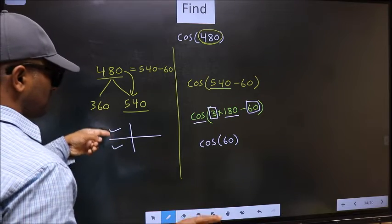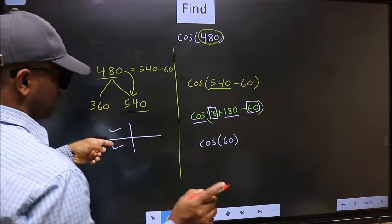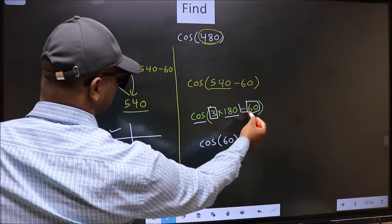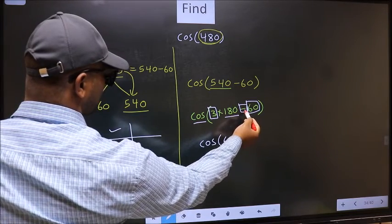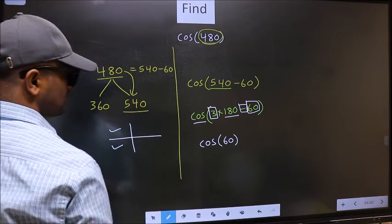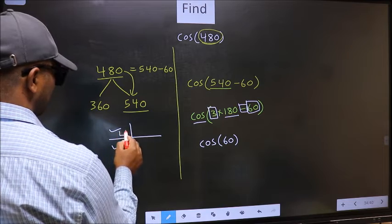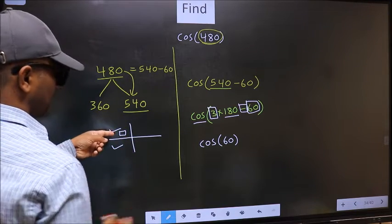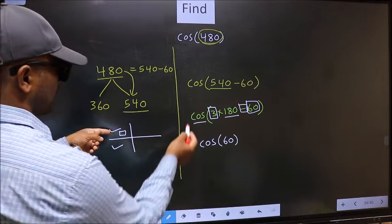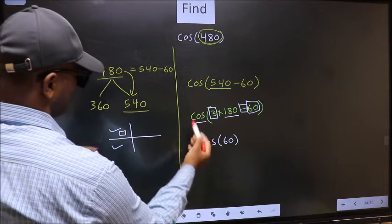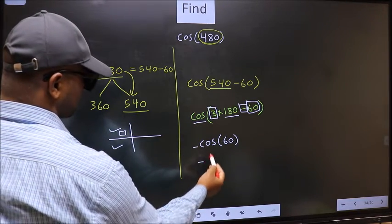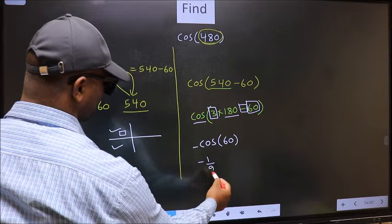So, now to select the quadrant, we should look at this symbol. Here, cos of 60 is 1/2. This is our answer.